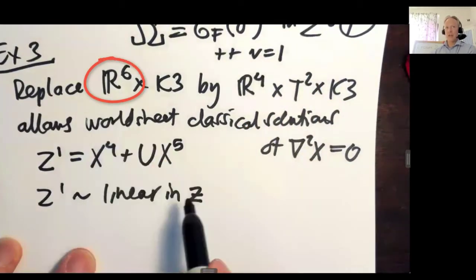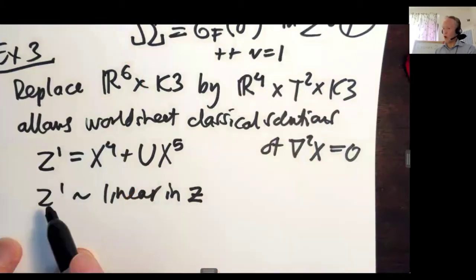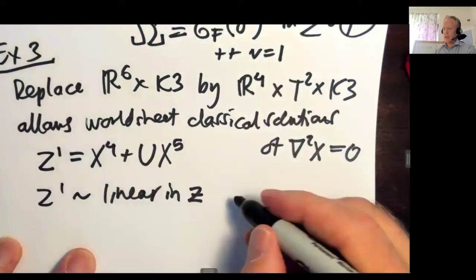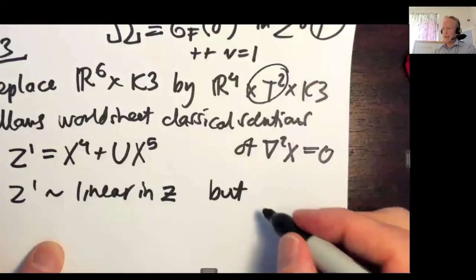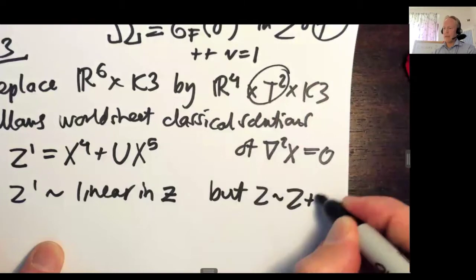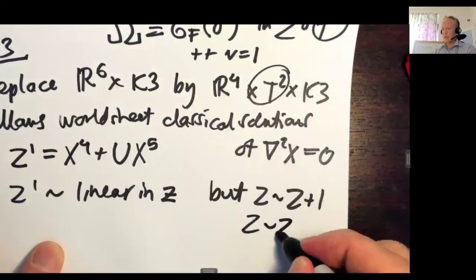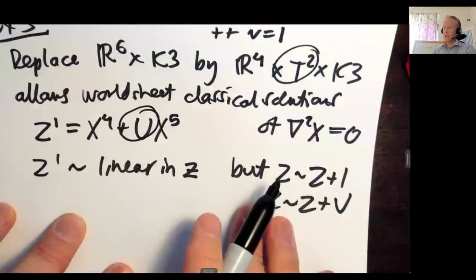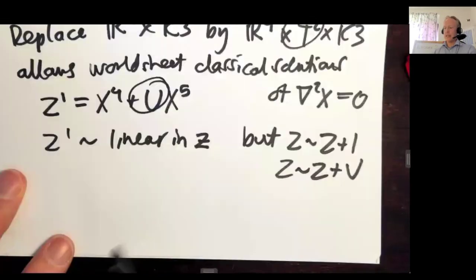If this is linear in Z, in non-compact space, this could never be meaningful, because the value of the embedding map would grow as you go around the world sheet, and you will never get back to the same point. But now, with the space-time torus, now we can have that Z is identified with Z plus 1, or Z is identified with Z plus U, where U is the complex structure of my space-time torus. So that means that it is possible to allow this kind of dependence.